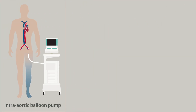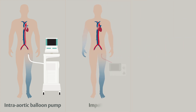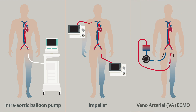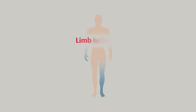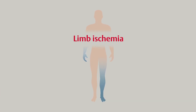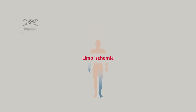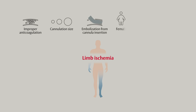primarily when patients have large arterial and or venous cannulations, such as a femorally placed intra-aortic balloon pump, femoral or axillary Impella, or most prominently with a femorally placed veno-arterial or VA ECMO cannulation. Factors leading to increased risk of ischemia include improper anticoagulation, cannula size, embolization from cannula insertion, female gender, young age,